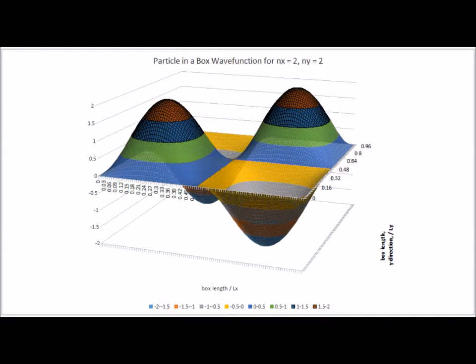Here is the wave function solution for the state where n sub x is equal to 2 and n sub y is also equal to 2. Note that in both the x and y directions, we have exactly one node.